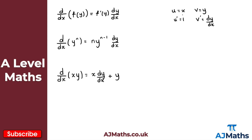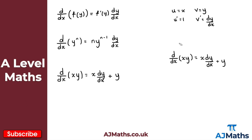Using the product rule, d by dx of x times y gives u times v prime, which is x times dy by dx, plus u prime times v, which is 1 times y, giving us y. So the result is x dy by dx plus y — the same result as before. It's a straightforward process to find the derivative when we have a product involving x and y.